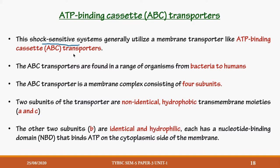This transporter protein has a domain where ATP can bind, hence it is called ATP Binding Cassette. This shock solution system uses many of these ABC transporters for transporting their solutes inside the cell. ABC transporters are found from bacteria all the way to humans, so they are widely present in different organisms.